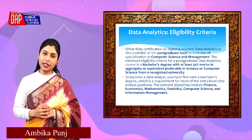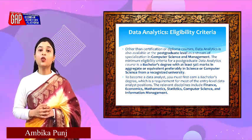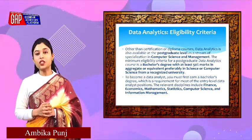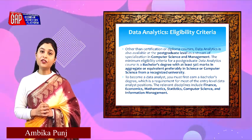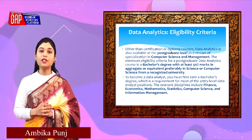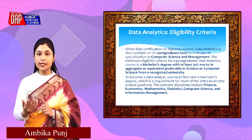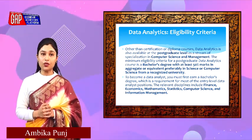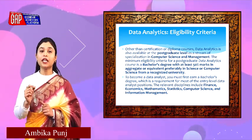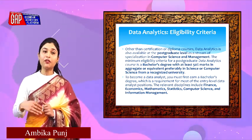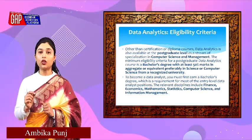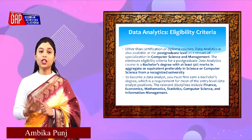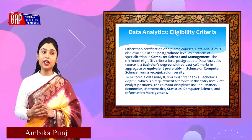Let us talk about eligibility criteria. Other than certification courses, one can also pursue bachelor, post-graduation, and even doctorate level courses in this field. After 12th, you can go for any suitable stream like commerce, science, or computer science. For post-graduation courses, at least 50% aggregate in a bachelor's degree or equivalent from a recognized university is required. To become a data analyst, you should first earn a bachelor's degree, which is a requirement for most entry-level data analyst positions.